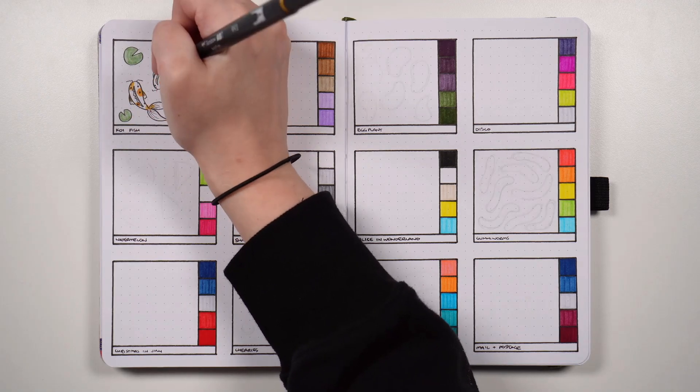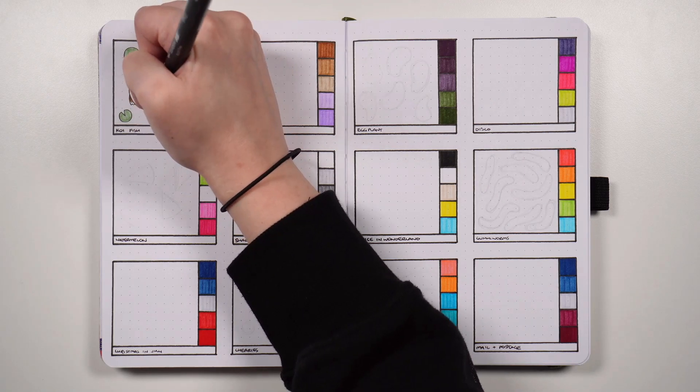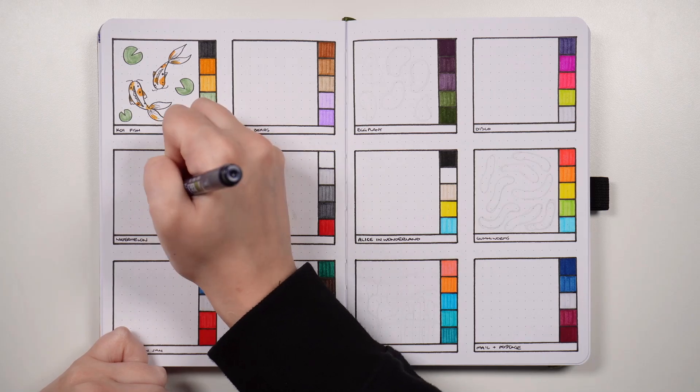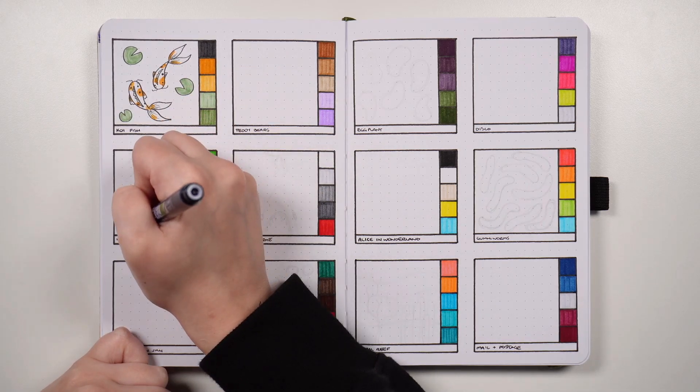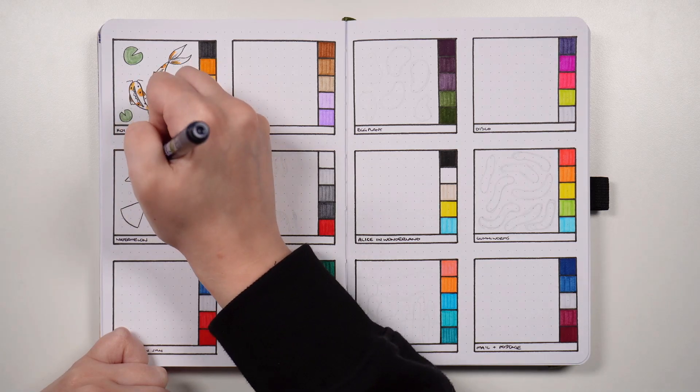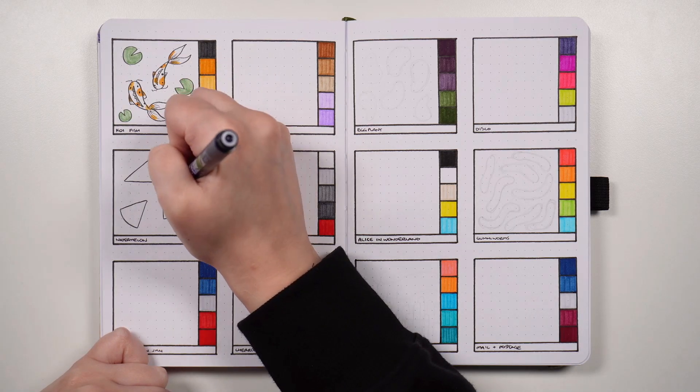Our next theme idea is also another one that I've done and actually one that I have done for July and that is a watermelon theme. If you're in the southern hemisphere like me having a watermelon theme in July might seem a little bit odd but if it's a bit warmer where you are then watermelon can make for a great theme.